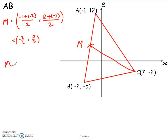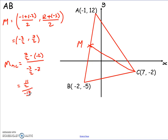I need the gradient of MC using the same formula. That gives: 7 over 2 take away negative 2, divided by negative 3 over 2 take away 7. On the top: 7 over 2 plus 2 — write 2 as 4 over 2 — gives 11 over 2. On the bottom: negative 3 over 2 take away 14 over 2 gives negative 17 over 2. So 11 over 2 divided by negative 17 over 2 simplifies to negative 11 over 17. That's my gradient of the median.